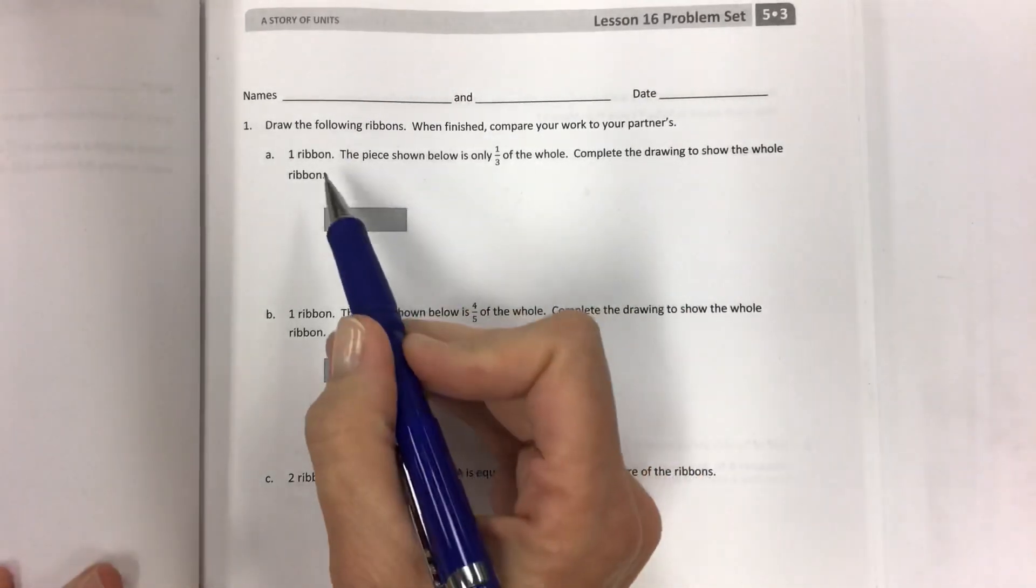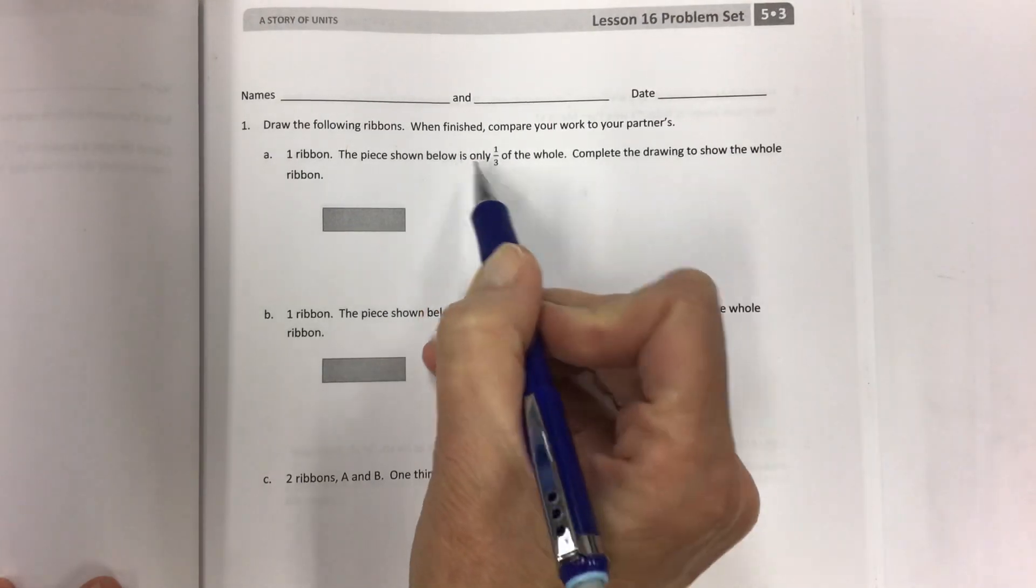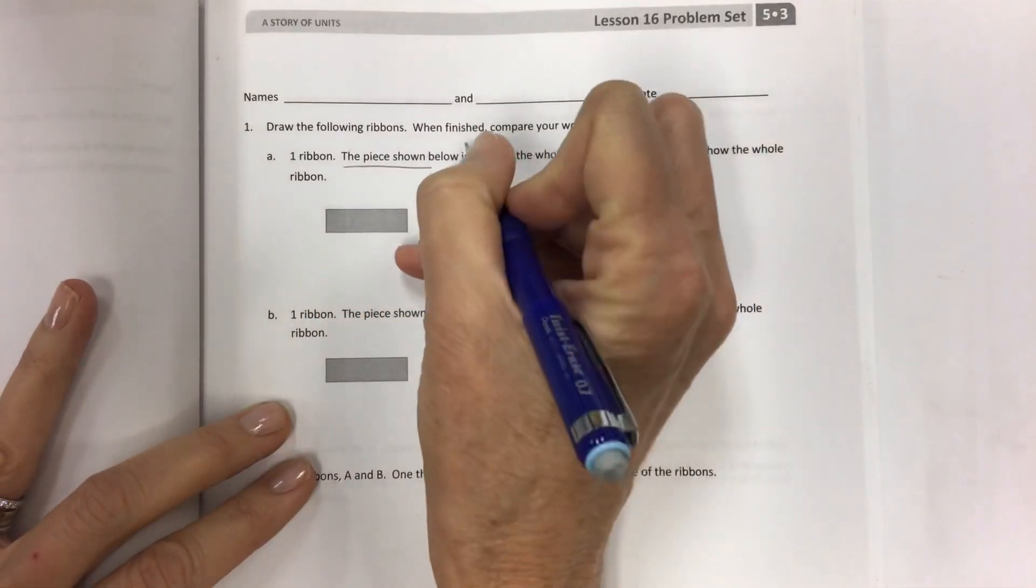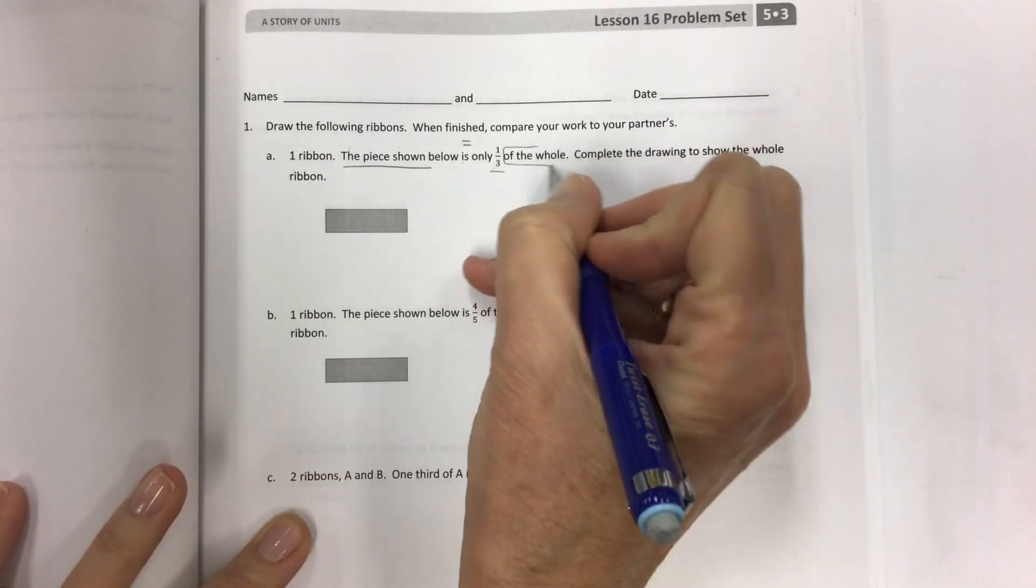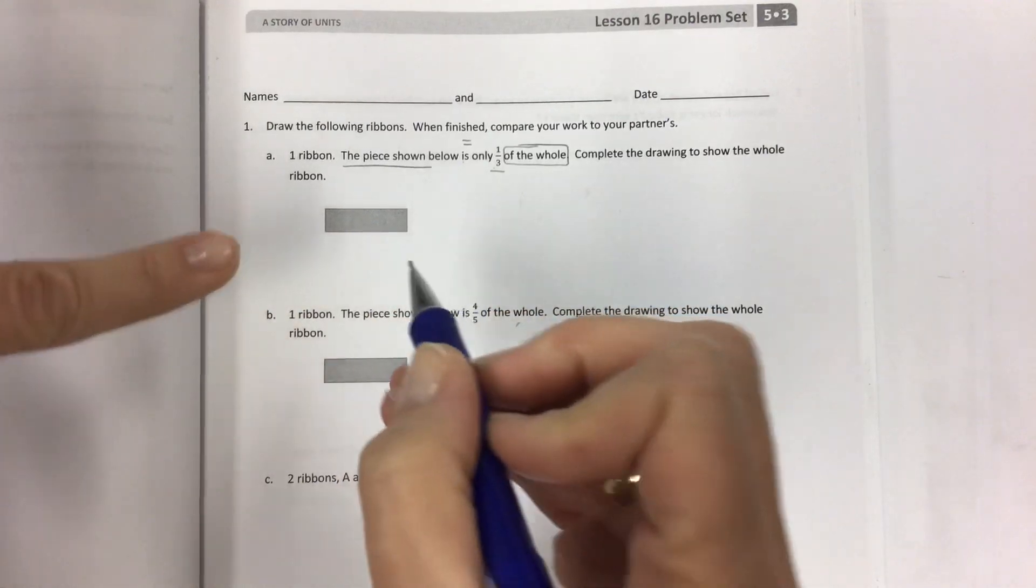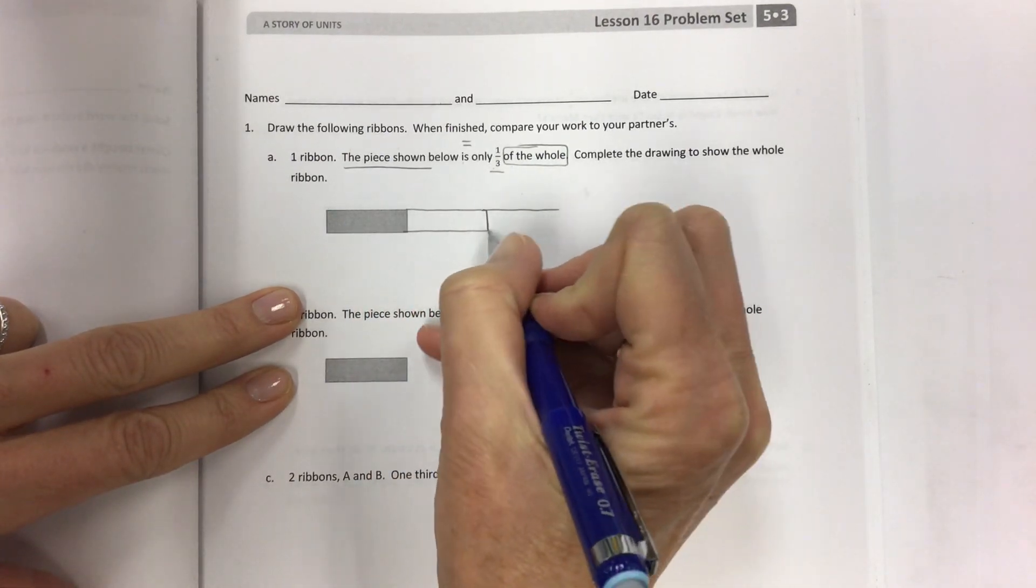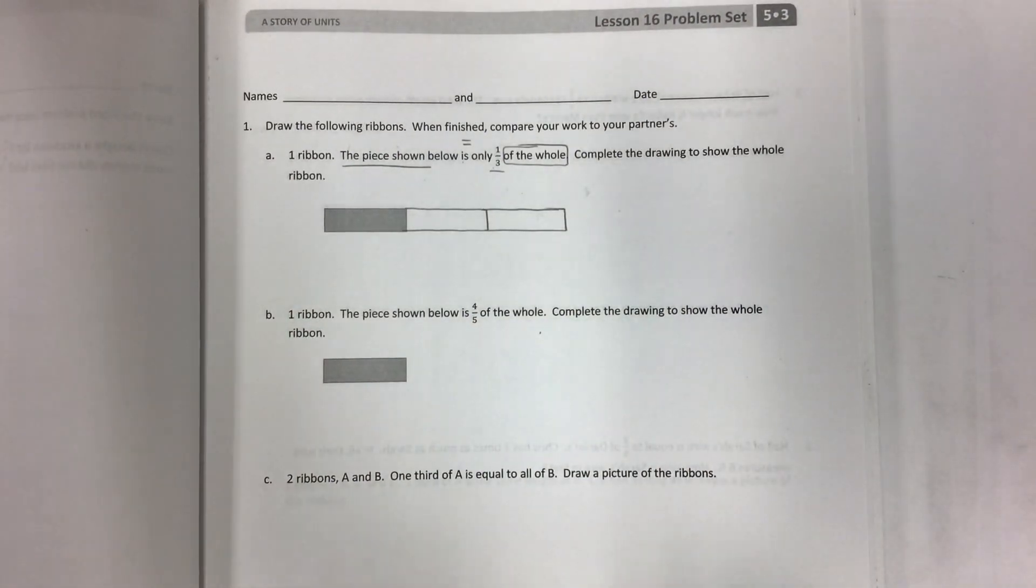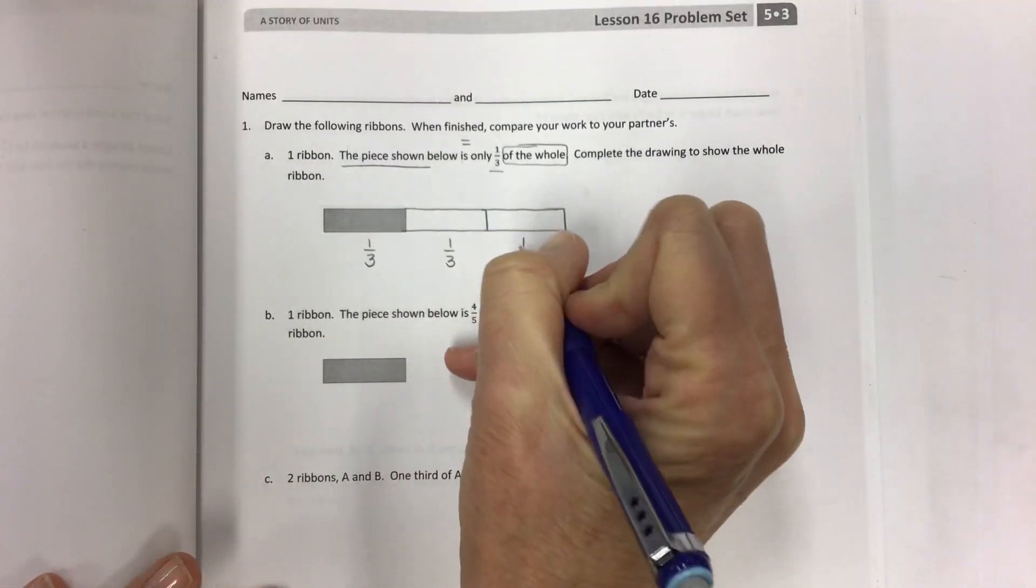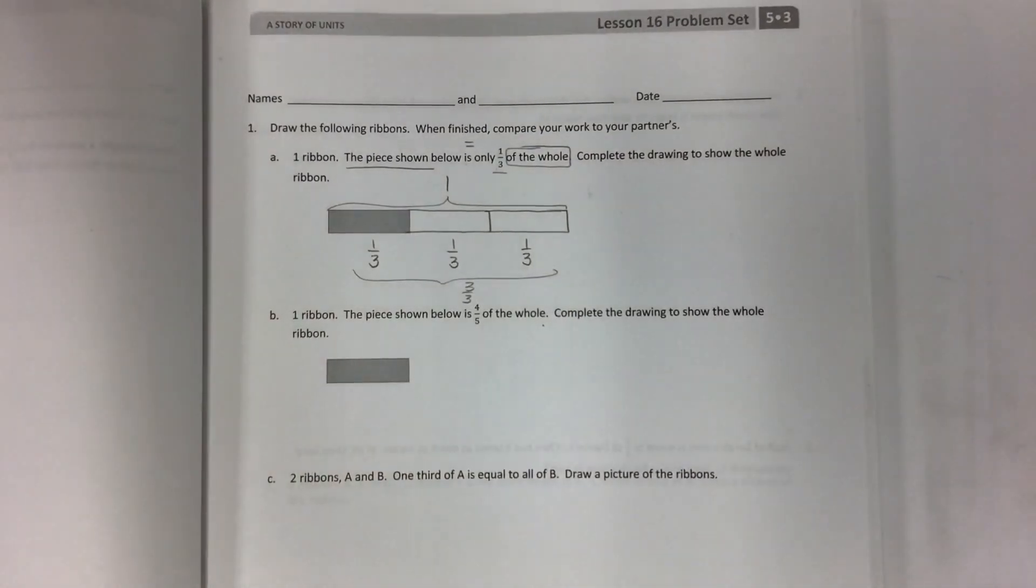Let's take a look. One ribbon, the piece shown below is one-third of the whole. I like to identify what the important information is, then complete the drawing. If this piece is one out of three parts, then you need to draw the missing pieces. If this is one-third, then I need another third and another third to make three-thirds, which makes one.